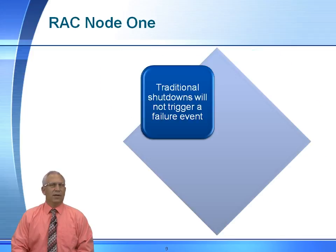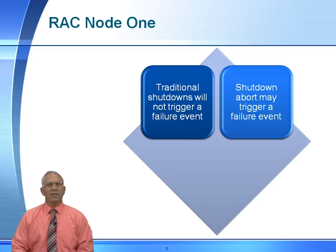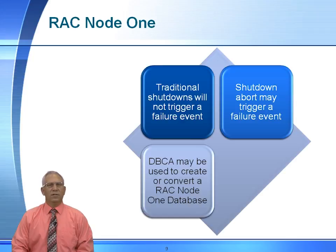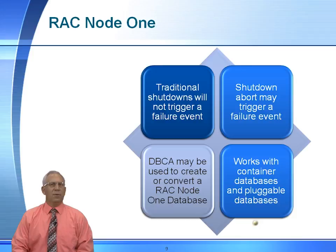A failure event is determined by an abnormal termination of services. A shutdown normal, a shutdown transactional, or a shutdown immediate is a normal shutdown. A shutdown abort is a failure event — issuing a shutdown abort could cause a failover to switch to the surviving node. You could use DBCA to create or connect to your RAC 1 database.